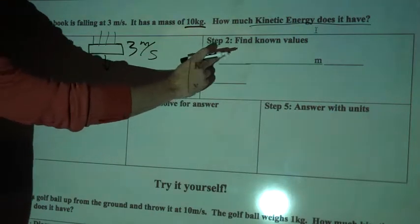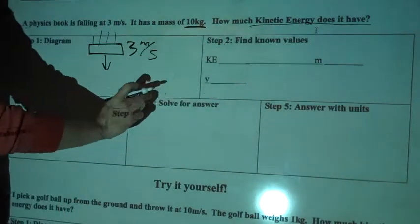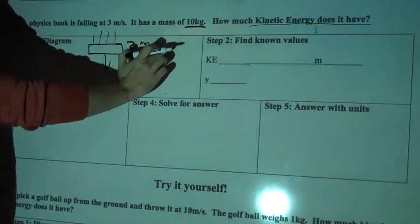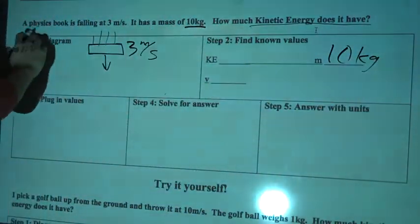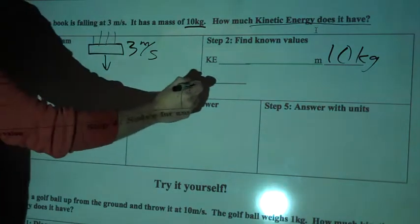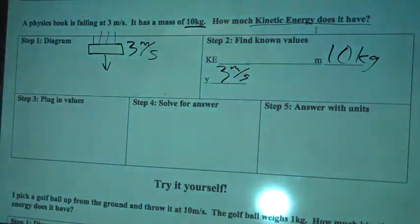Find known values. So kinetic energy, we don't know that, we're trying to find out how much it has. A mass of 10 kilograms, so I'll put 10 kilograms right here. And then it's falling at 3 meters per second, so velocity, 3 meters per second.